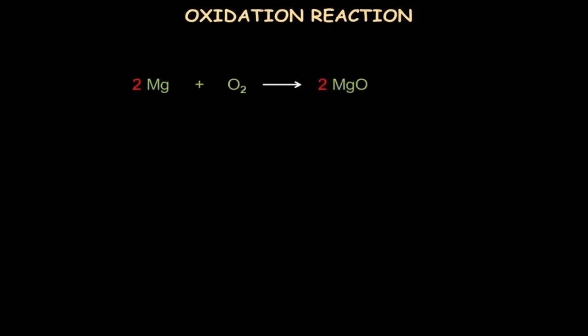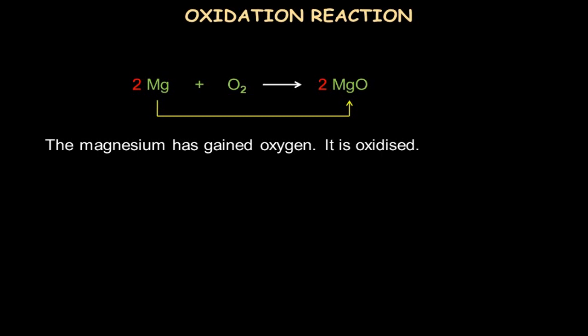Starting with one example of an oxidation reaction: here magnesium is reacting with oxygen to form magnesium oxide. In this reaction, magnesium is gaining oxygen and becoming magnesium oxide. Since magnesium has gained oxygen, we say it is oxidized. So the gain of oxygen is called oxidation.